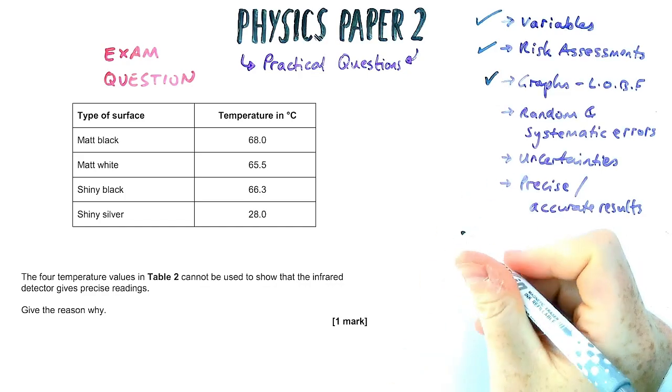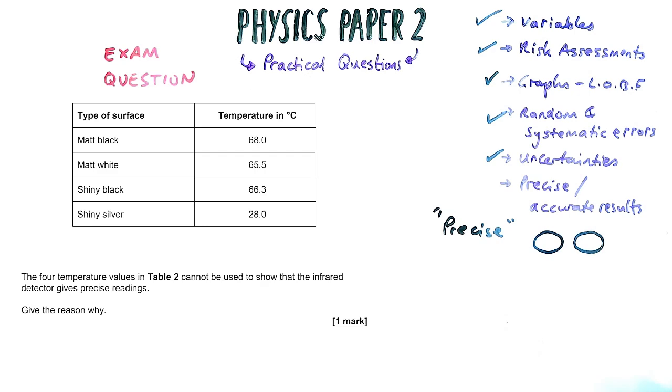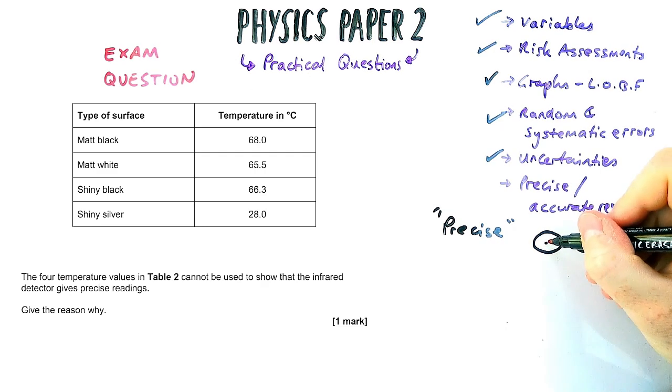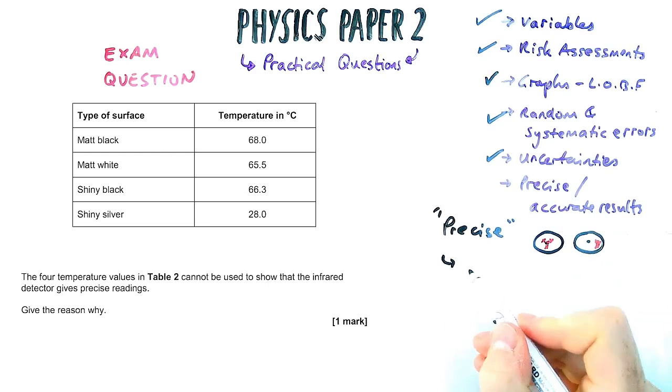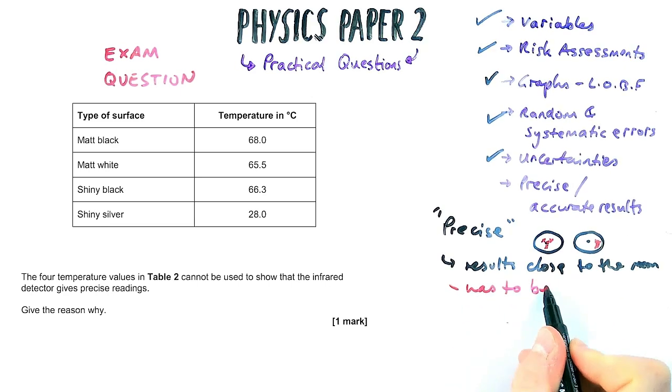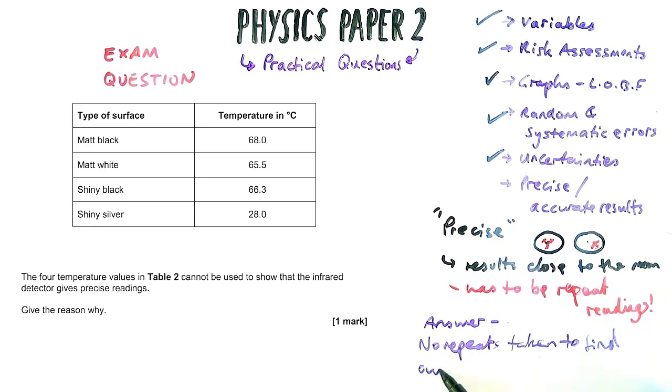And the last question we're going to look at is to look at these readings here. And the question says, this table cannot be used to show that infrared radiation gives precise readings. Precise is if you're firing darts at a dartboard, and they're very close together. They don't have to be accurate, but they'd be close together or close to the mean value. That's what precise means. Now, with our measurements here, you've not got any repeats, so there has to be repeat readings for it to be precise. Otherwise, we don't know if they're close together, if there aren't actually any of them. So what we'd say here is that there's no repeat readings or no repeats taken to find out if the results are close together or not.